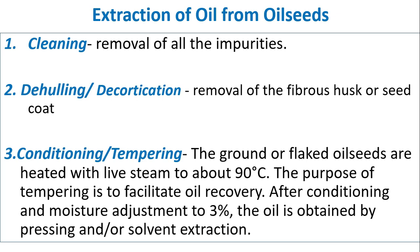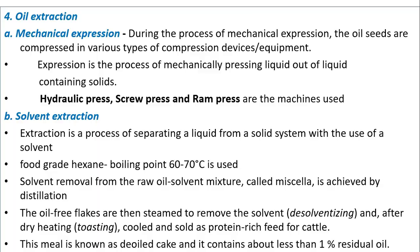After conditioning and moisture adjustment to 3%, the oil is obtained by processing or solvent extraction. In mechanical expression, the oil seeds are compressed in various types of compression devices. Expression is the process of mechanically pressing liquid out of liquid-containing solids. Normally, hydraulic press, screw press and ramp press are used.